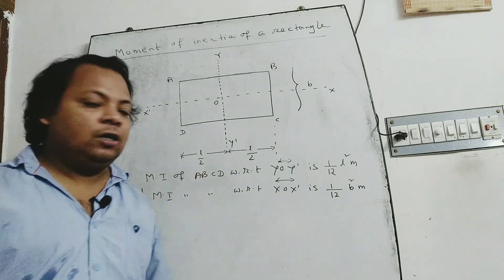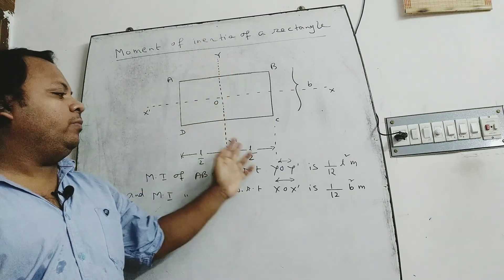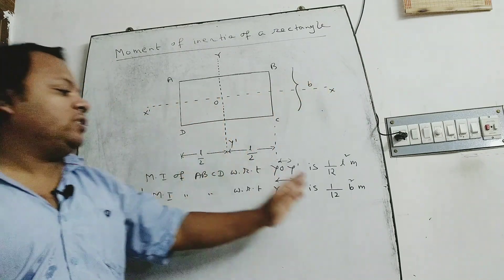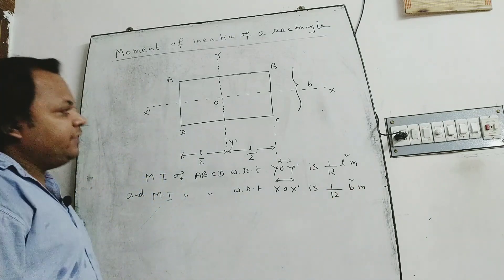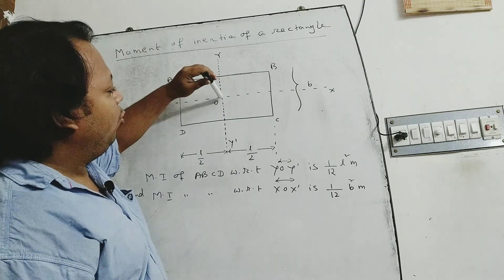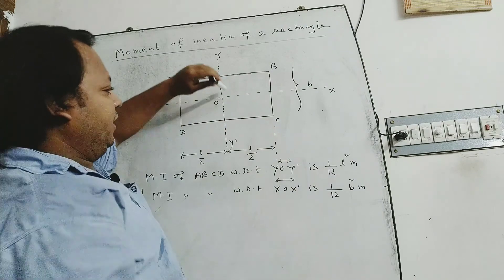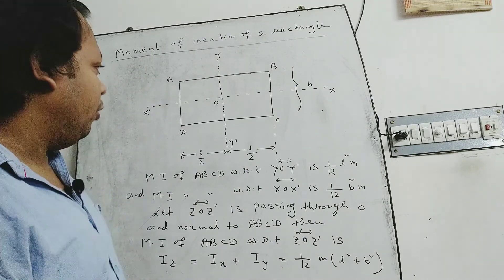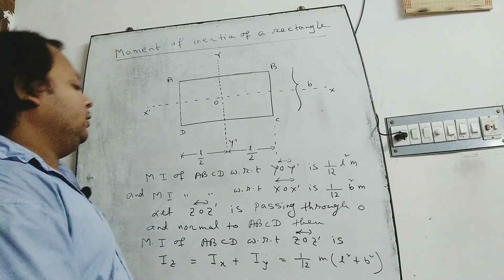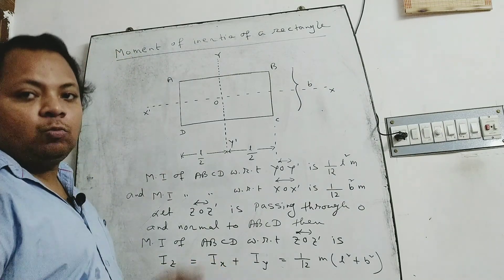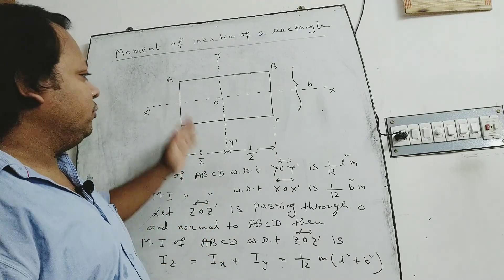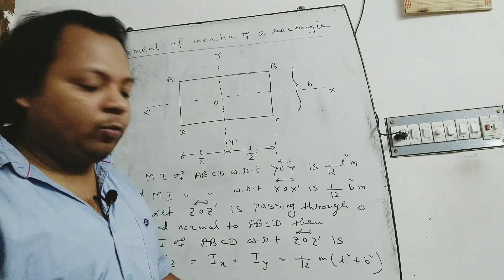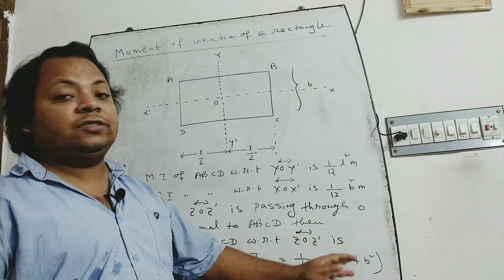The moment of inertia of the rectangle with respect to yOy prime is 1 by 12 mL squared, and with respect to xOx prime is 1 by 12 mB squared. Let z be another axis passing through point O and perpendicular to the plane of the rectangle. By the perpendicular axis theorem, the moment of inertia with respect to z axis is Iz equal to Ix plus Iy, which equals 1 by 12 m into L squared plus B squared.